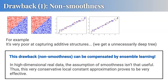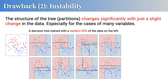But this first downside — the non-smooth boundary — can be compensated by ensemble learning. That's why ensemble learning comes into this context. The second downside is instability. Decision trees are easy to interpret intuitively, but they have a big issue: they are unstable, meaning if the training dataset changes a little bit, the constructed decision tree changes drastically.